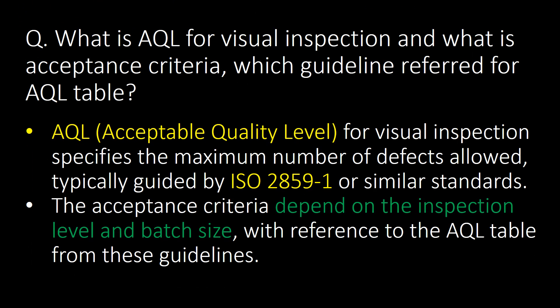What is AQL for visual inspection and what is the acceptance criteria? Which guidelines are referred for the AQL table? AQL — acceptable quality level — for visual inspection specifies the maximum number of defects allowed, typically guided by ISO 2859-1 or similar standards. The acceptance criteria depends on the inspection level and batch size.